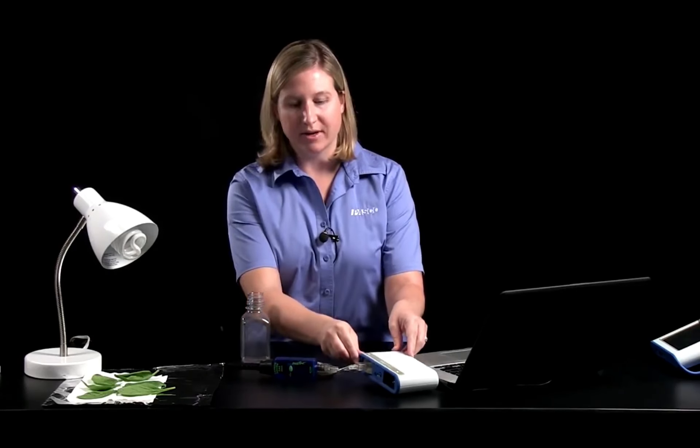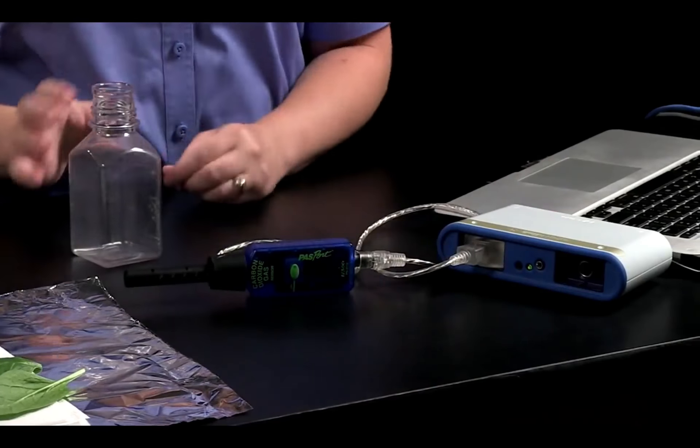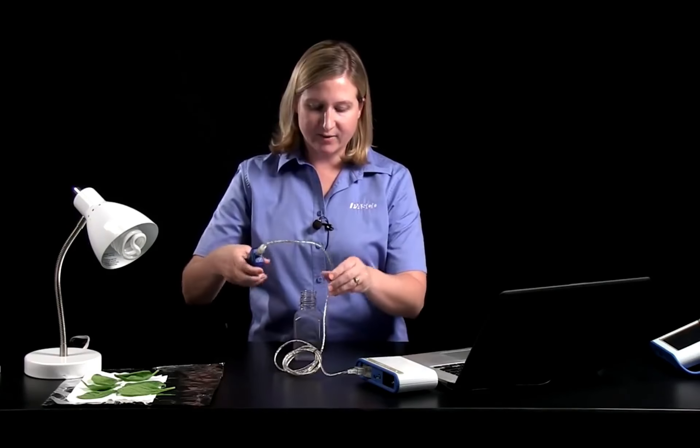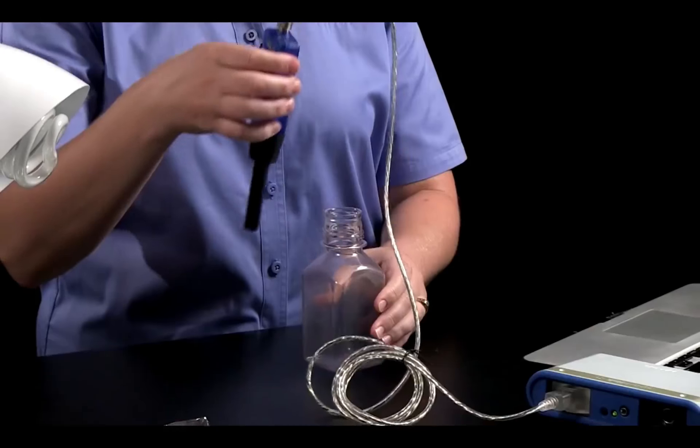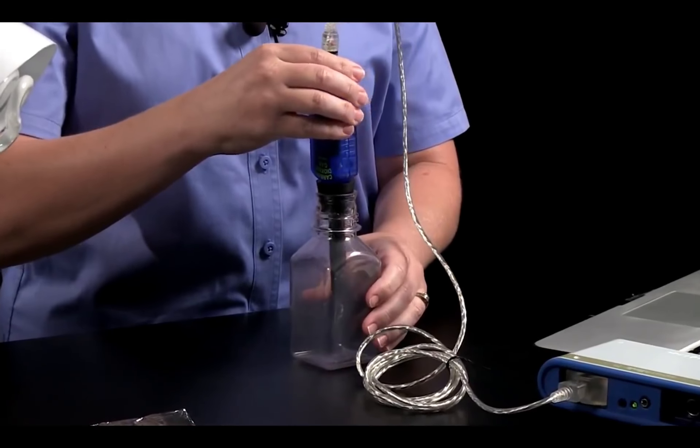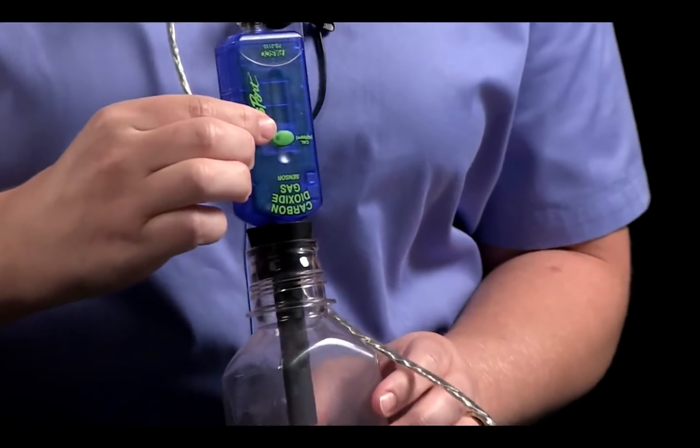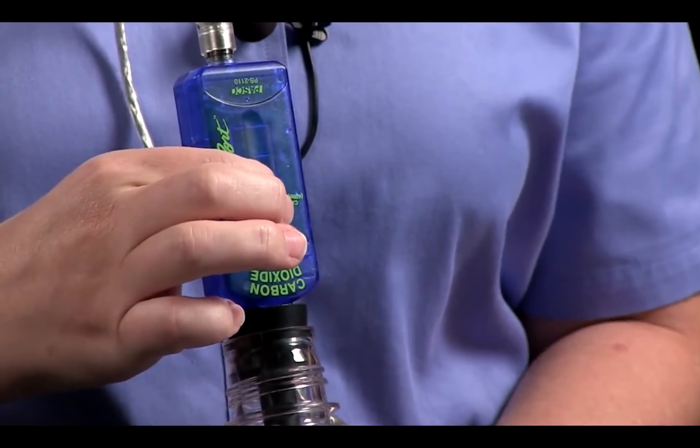So to get started, I already connected my carbon dioxide sensor to my computer via the SparkLink. And I'm going to calibrate my carbon dioxide sensor before beginning the lab. So I have a sample of fresh air in the bottle. I'm just going to plug the bottle with the carbon dioxide sensor. And there's just a one button calibration for this sensor. I'm going to hold the green button down for a couple seconds.